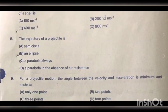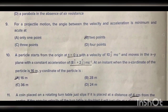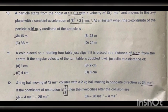Question three: A trajectory of a projectile is — option number C is your correct answer: a parabola, always. Question four: For a projectile motion, the angle between the velocity and acceleration is minimum and acute at two points — option number 2 is your correct answer.